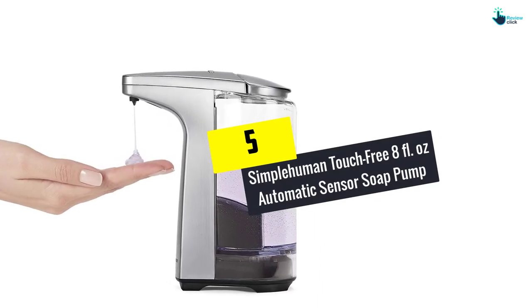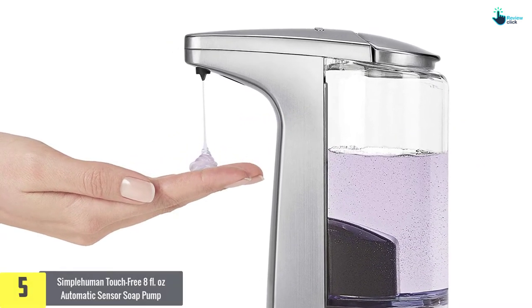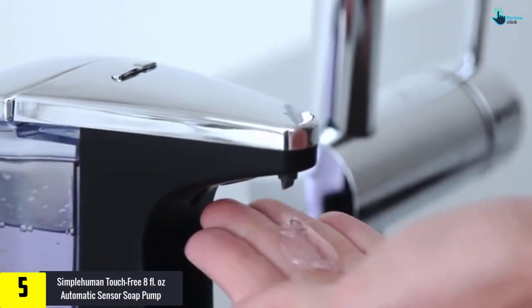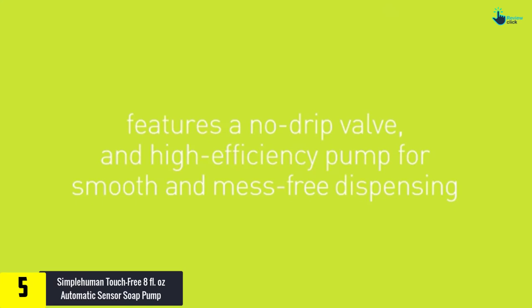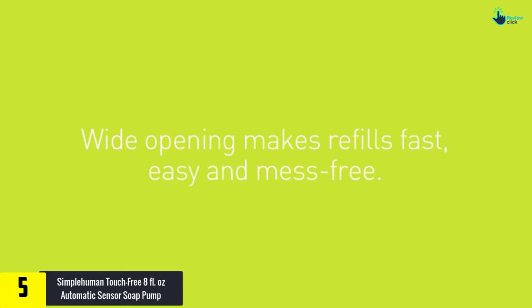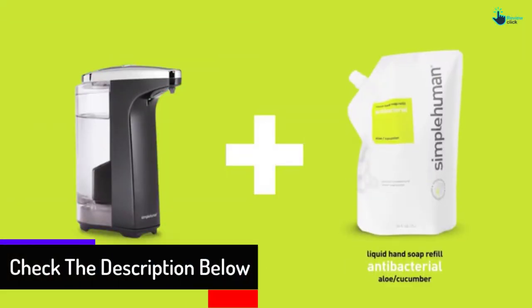Starting at number 5, we have the Simple Human Touch Free 8 Fluid Ounces Automatic Sensor Soap Pump. This pump is made to maximize the forward flow and reduce backflow for a more consistent and faster dispensing with only 0.2 seconds. It usually dispenses the right amount consistently and quickly. It is ideal for your bathroom and kitchen.